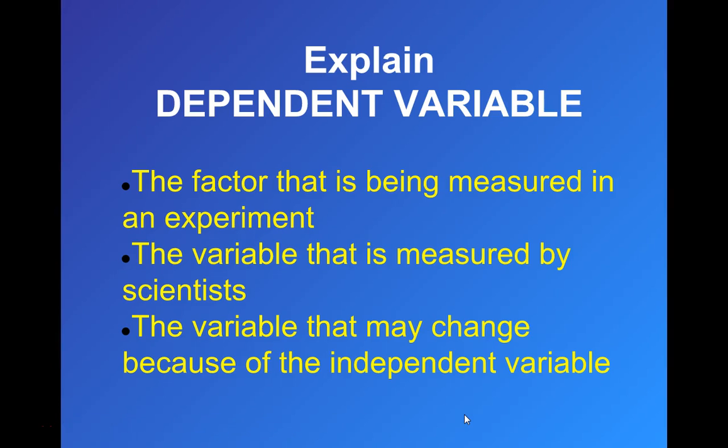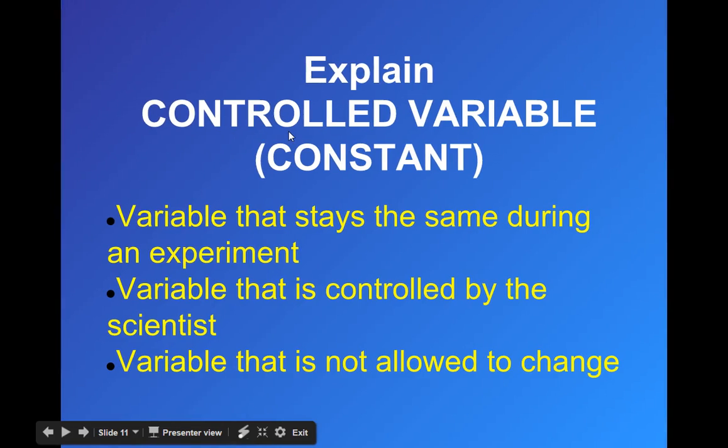So the dependent is the outcome. This is what you are measuring in the experiment. So if you're going to measure the height of the plant or the growth rate of the plant, that would be your dependent variable. And you could treat the different plants with your different types of fertilizer, which is your independent, and we are going to measure the outcome. So how did fertilizer one versus fertilizer two versus no fertilizer affect the growth? So your independent variable would be the type of fertilizer and your dependent variable is the growth rate or the growth of that plant.